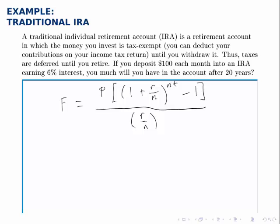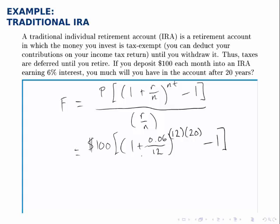This problem is straightforward: we take the formula and plug everything in. We'll just start filling in all the pieces. P is 100, R is 6% or 0.06, N is 12, T is 20 because we're doing this for 20 years, and then the denominator we fill in R and N.